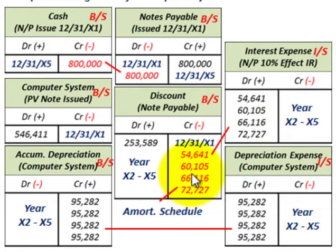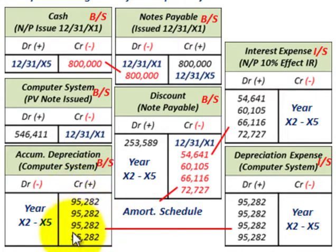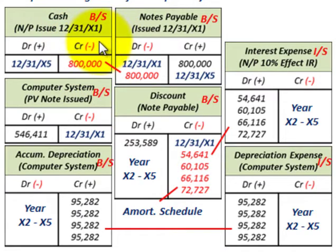When the note actually comes due, you debit Notes Payable $800,000 to remove it from the books, and credit Cash $800,000. The discount would have been fully amortized down to zero by that point. The accumulated depreciation covers four years here in our illustration, though the computer system actually has a five-year life. That takes care of our zero interest bearing note exchanged for property — the computer system — and how we record and amortize it.